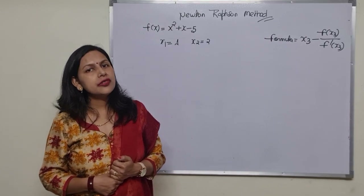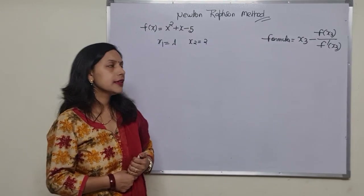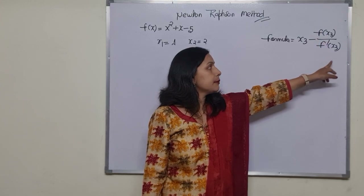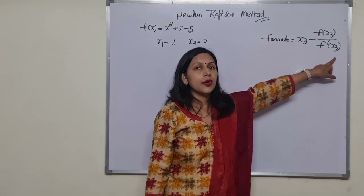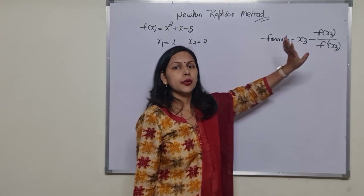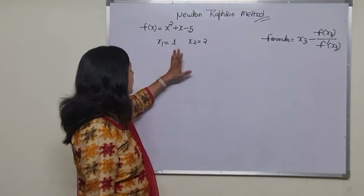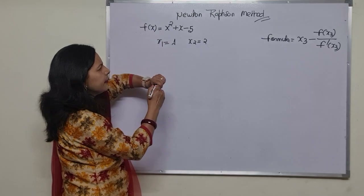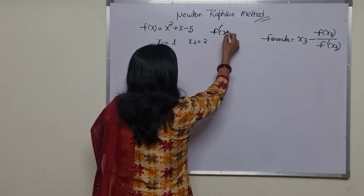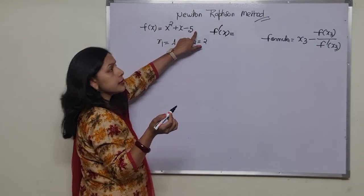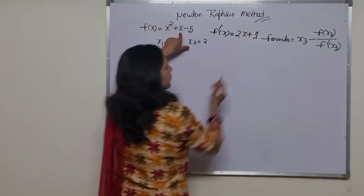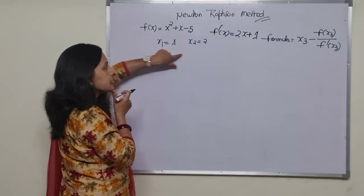In the Newton-Raphson method, we have the formula: x3 minus f(x3) divided by f'(x3). Here, f'(x3) means the differentiation of x3. We need one equation and its derivative. The differentiation of the equation gives us 2x plus 1.